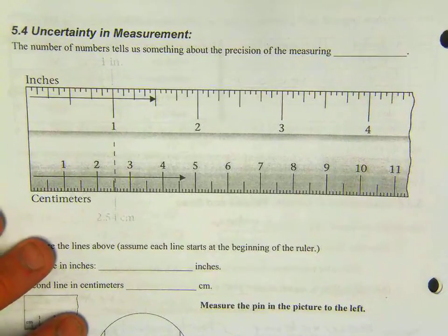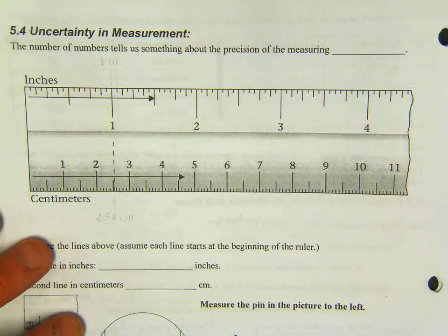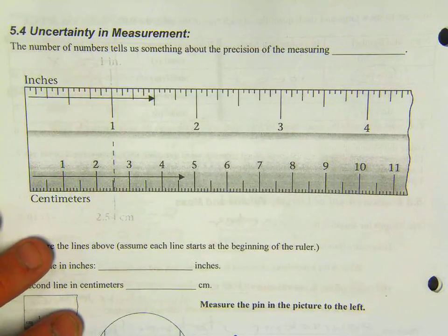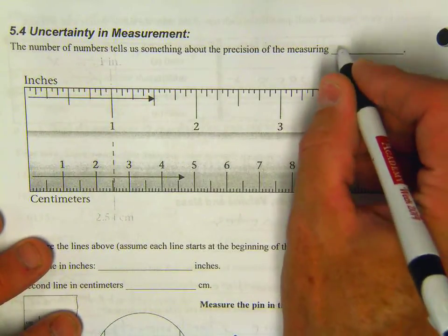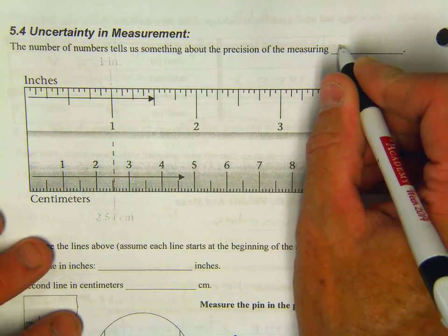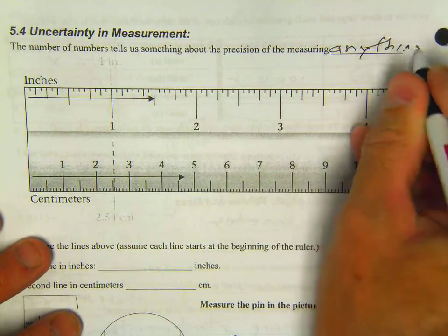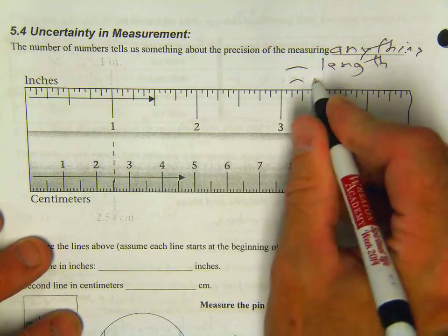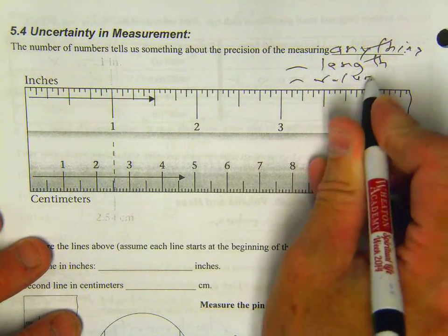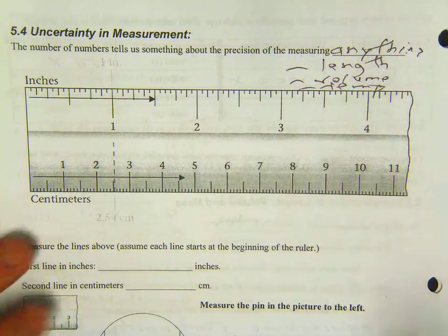Uncertainty and measurement. This relates directly to what we're talking about today. The number of numbers tells us something about the precision of measuring anything really. It could be length, it could be volume, it could be temperature, and so forth.